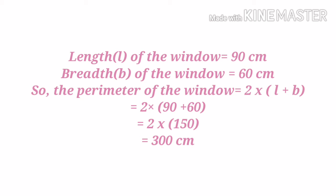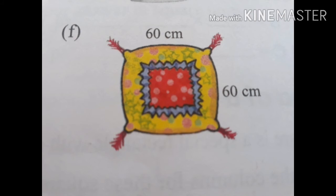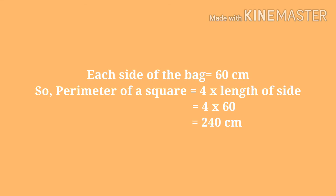Most importantly, you must write the units — here it is centimeter, so don't forget to write the unit. Next, we have a square-shaped rice bag. Since a square has all sides equal, each side is 60 centimeter. Using the formula perimeter of square = 4 into length of side, we put 60 and multiply by 4 to get 240 centimeter.